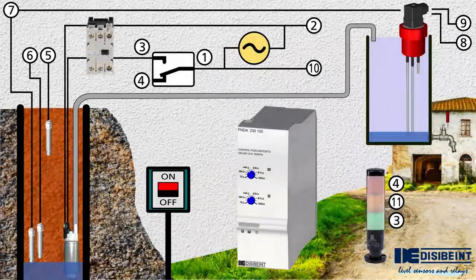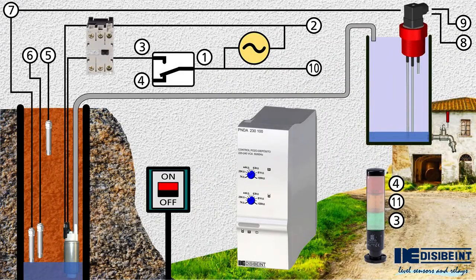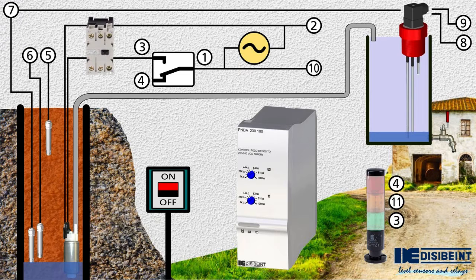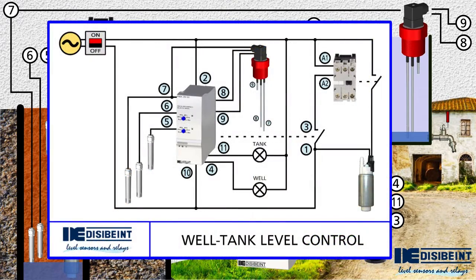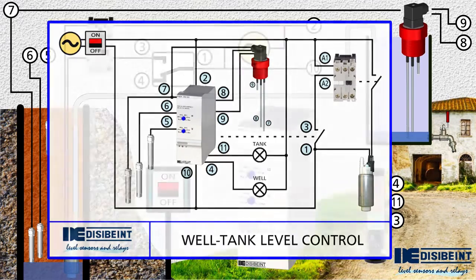The PNDA level relay is the simplest and most effective solution to keep our tank with enough water to consume without interruptions. A single device controlling two levels simultaneously in an intelligent way. We hope that this video has been useful for you to better understand the operation of a conductive level relay for the automatic control of a tank fed from a well. In the description you will find a link to the electrical diagram of the installation that we have just seen.